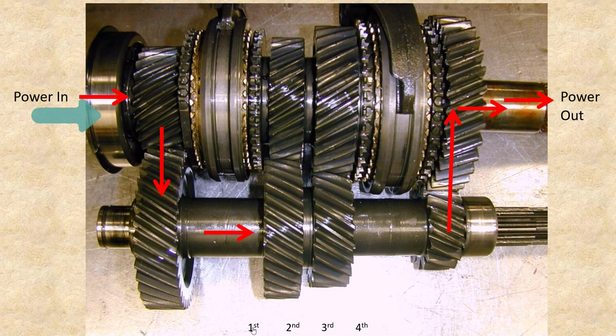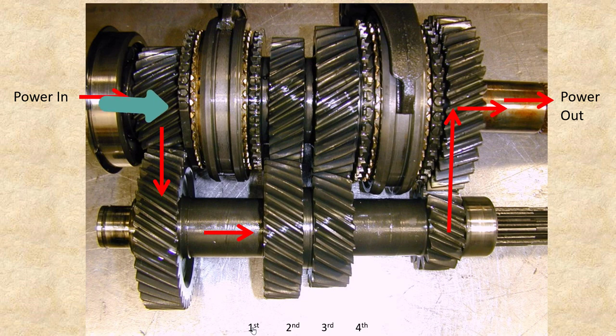Torque travels from the drive input gear through the counter gears to the first driven output gear where it is sent to the output shaft via the synchronizer.